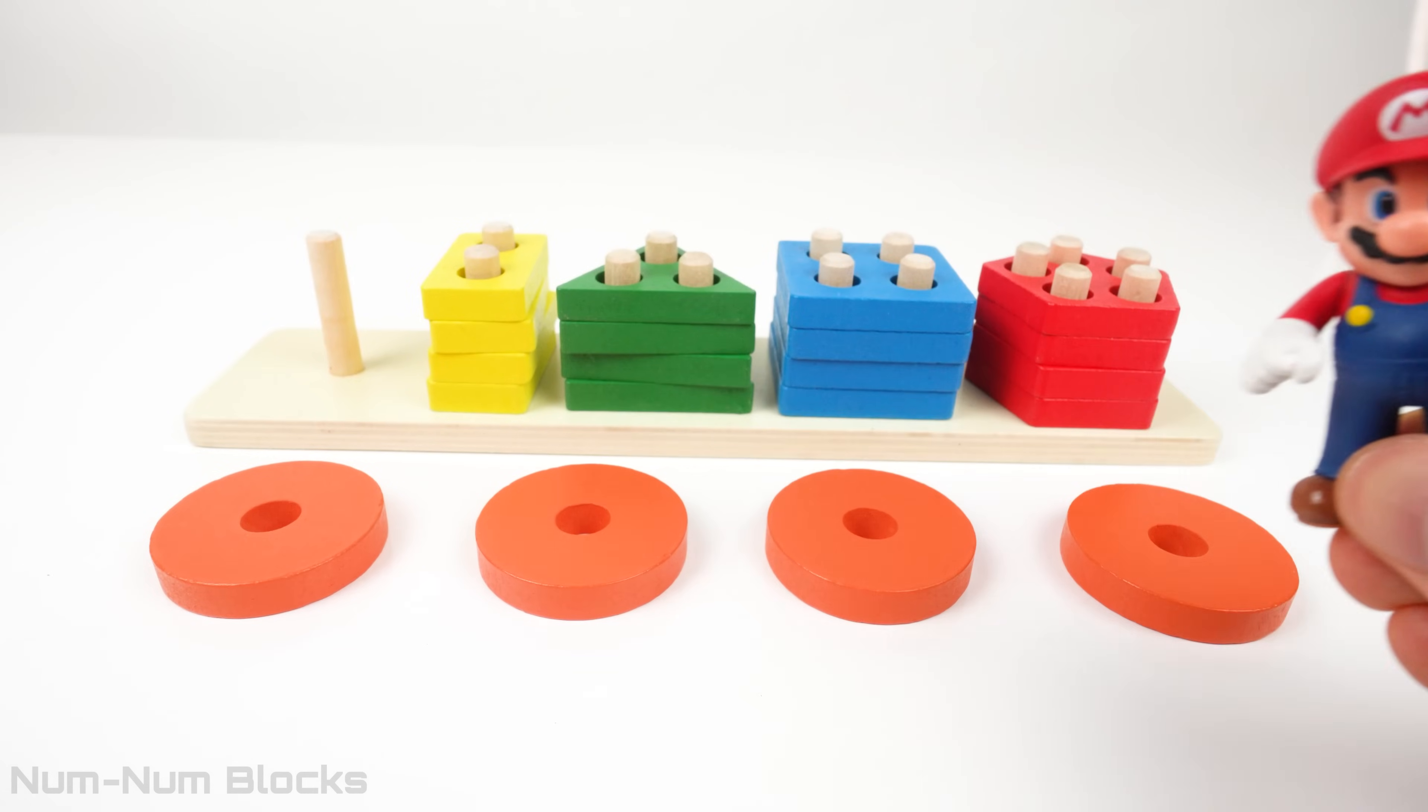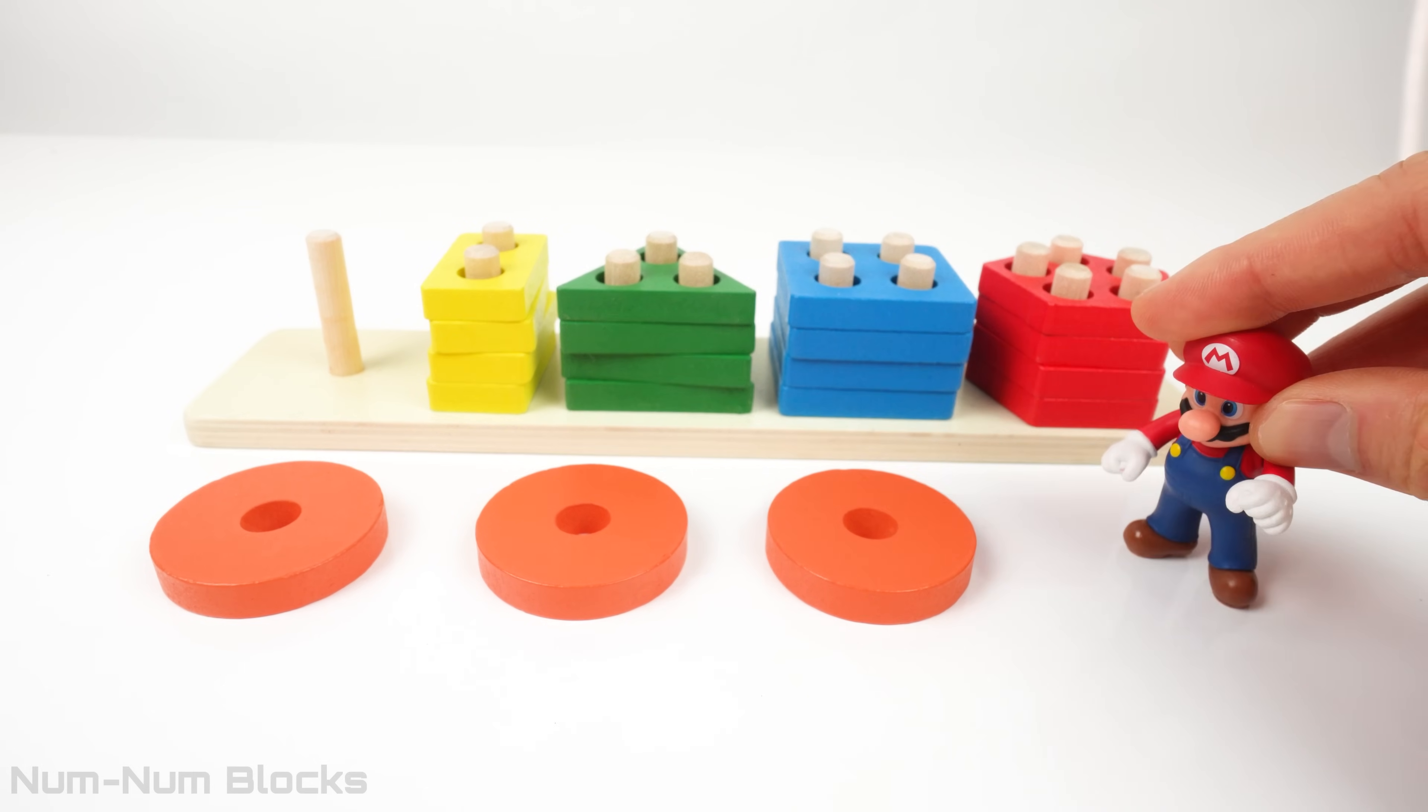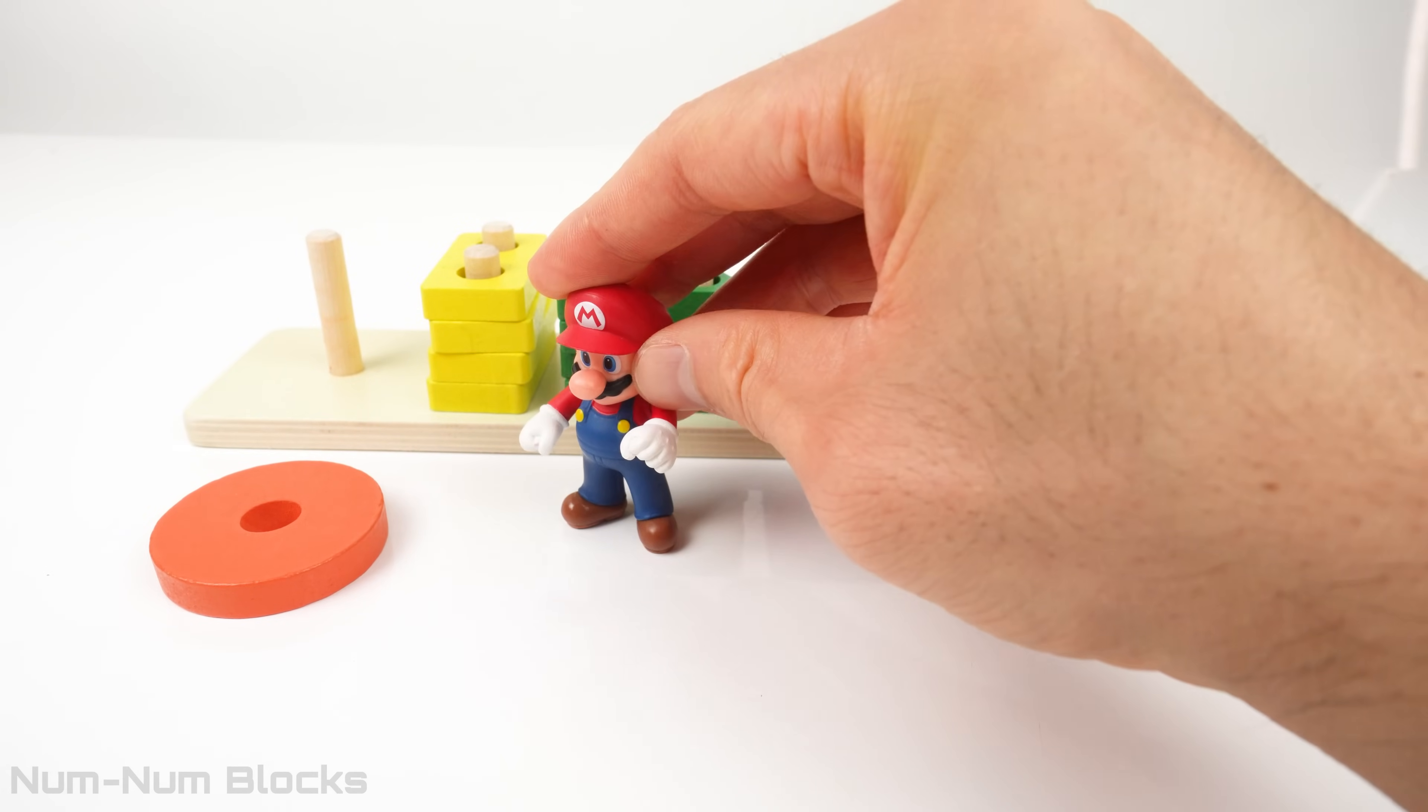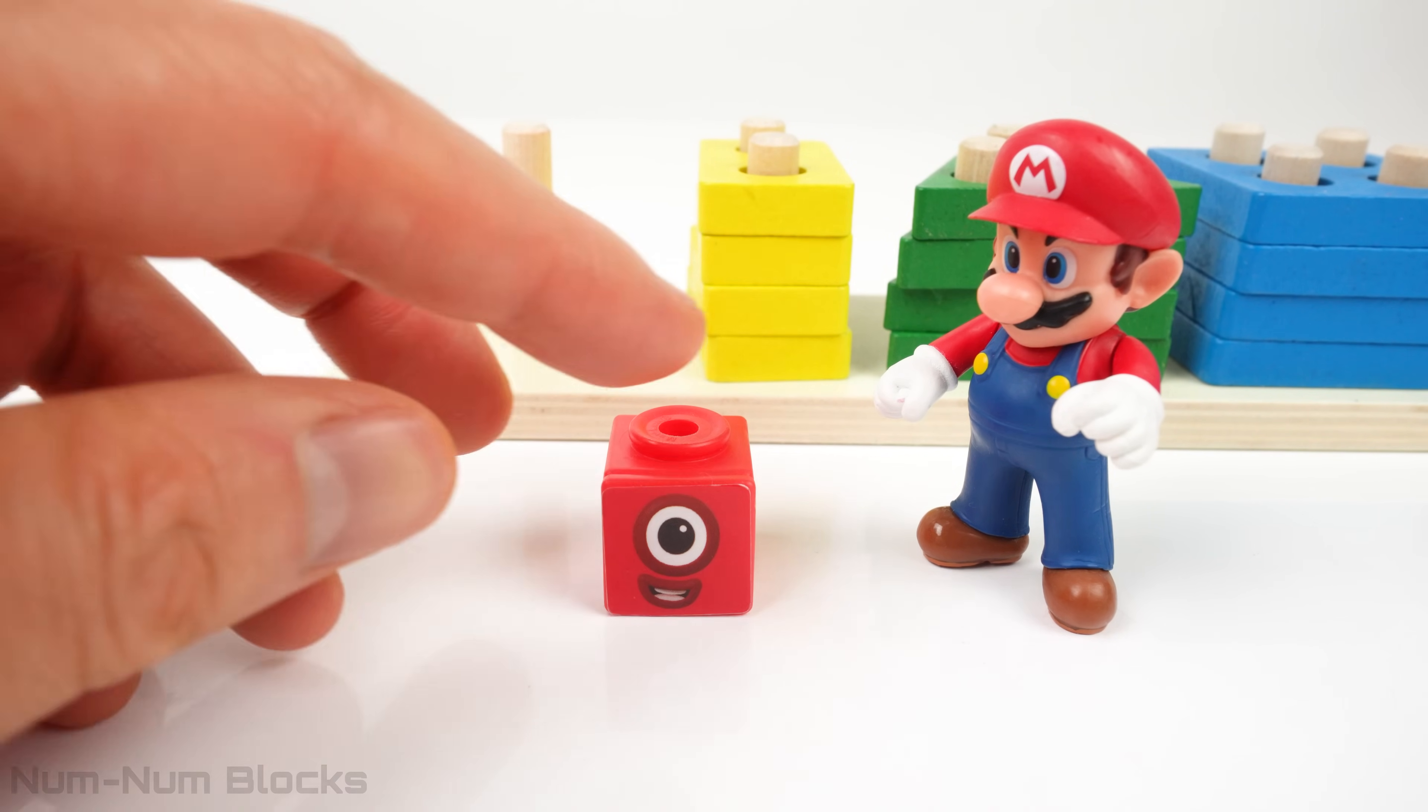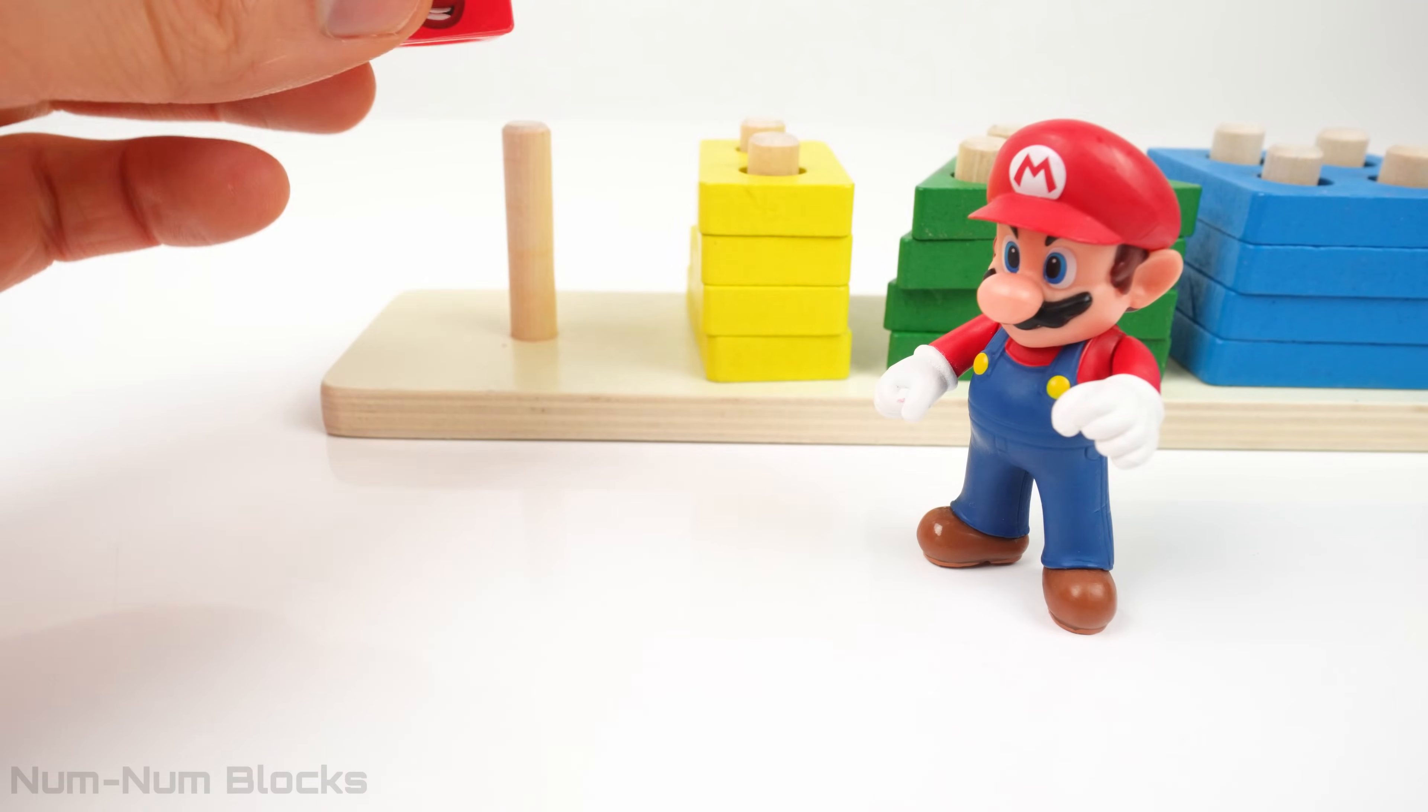Mario is here to help. Mario is going to stomp away three circles to get to one. Four minus three equals one. Welcome back, One. Thank you for saving me. You're welcome, One.